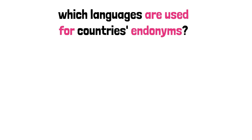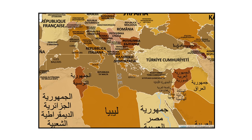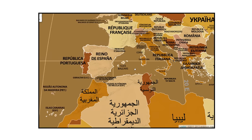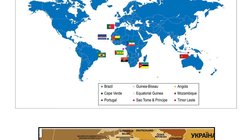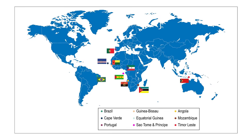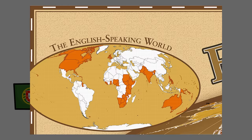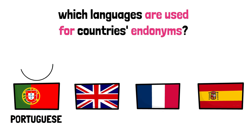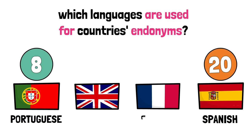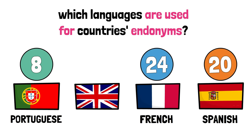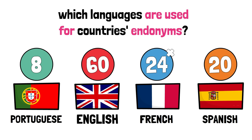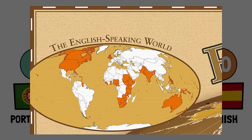Most countries have their own language, and so their name for themselves is written in that language, like Turkey using Turkish, or Portugal using Portuguese. But going from Portugal's example, Portuguese is also used as the endonym language in many other countries worldwide, a consequence of their colonialism. And this happens as well, mostly with English, French, and Spanish. Portuguese is used in the endonyms of 8 countries, Spanish by 20 countries mostly in America, French by 24 countries/territories worldwide, and English is used in the endonyms of 60 countries or territories worldwide — by far the most used language.